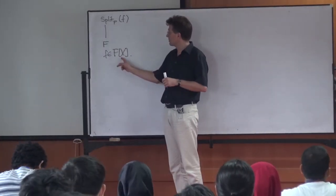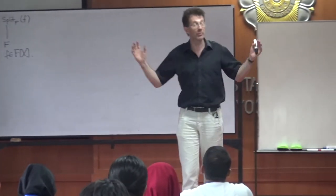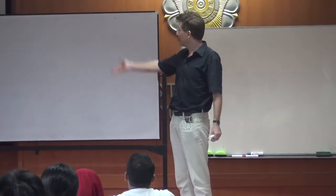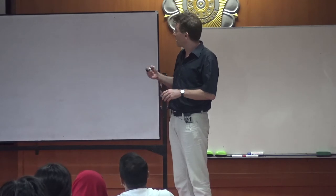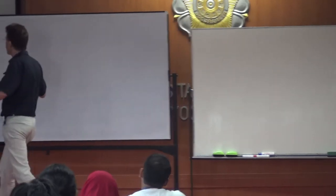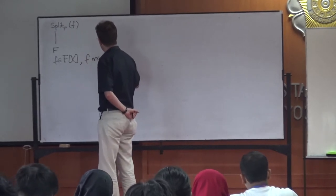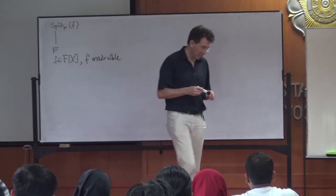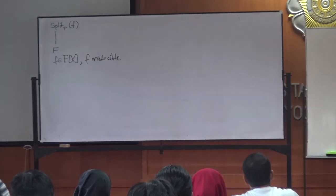We've also seen that even if the polynomial is not separable — because it's (x minus 2) cubed, for instance — you just join 2 and it's still a separable extension. So you can wonder: if you take F irreducible, will it automatically be separable? Can you think of an irreducible polynomial which has multiple roots?